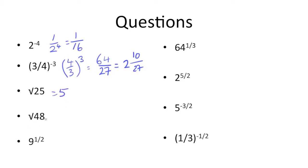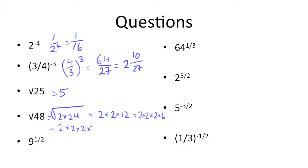Next off, we have the square root of 48. Now we need to simplify this out. 48 isn't a perfect square, so we need to get the factors of 48. The factors are 2 times 24, which simplifies to 2 times 2 times 12, further simplified to 2 times 2 times 2 times 2 times 3. Now what we can do is take pairs and bring them outside. We have one pairing of 2 and another pairing of 2, which means we can bring 2 and 2 to the outside. 2 times 2 is 4, and we're left with the square root of 3. So the square root of 48 simplifies to 4 times the square root of 3.